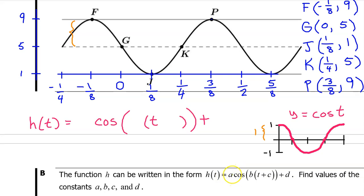Look at the parent function. Notice that the distance from the midline to the maximum value is one. Now compare that to the graph of h of t. The distance from the midline to the maximum value is four. That is a vertical dilation by a factor of four. So the a value is four. In the context of periodic functions, this vertical dilation is called the amplitude.